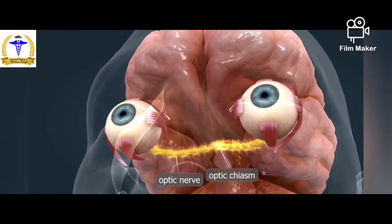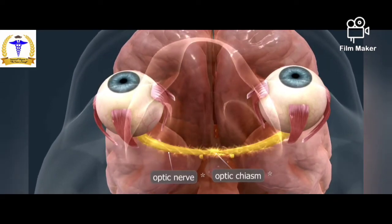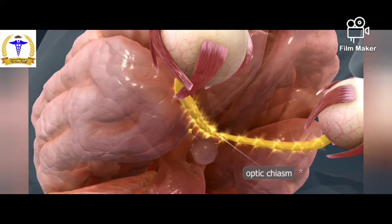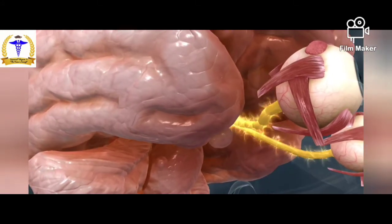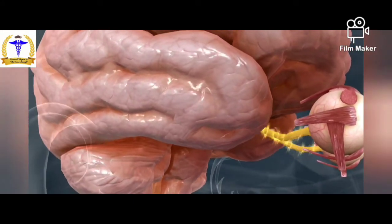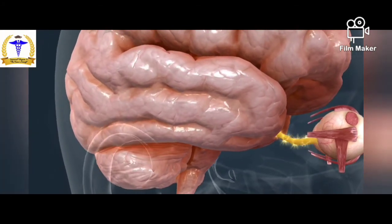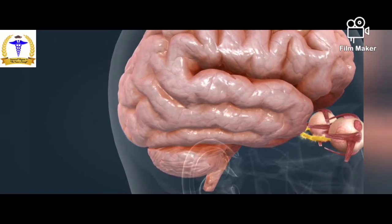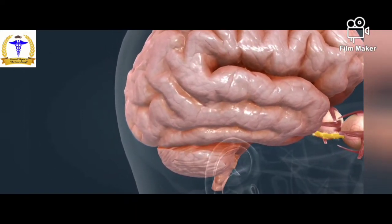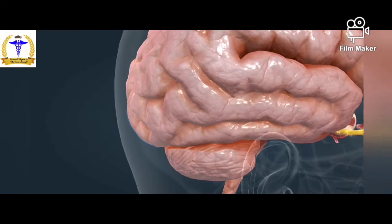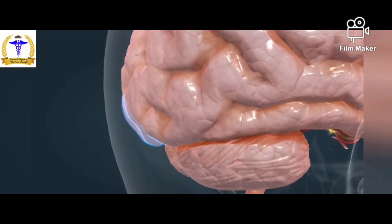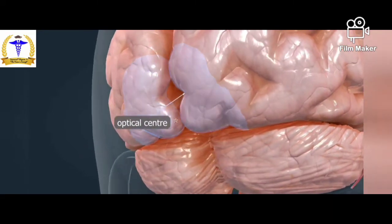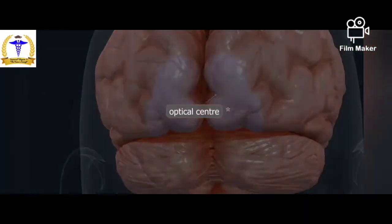The impulses caused by light in the eyes are transmitted to the brain by the optic nerves, also called cranial nerve 2. The optic nerves are partially crossed in the optic chiasm. Therefore, impulses from the inner sides of each retina cross over to the opposite side of the brain, while impulses from the external side stay on the same side after entering the brain.